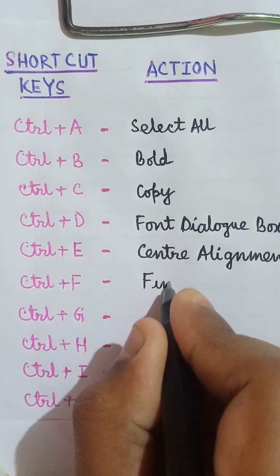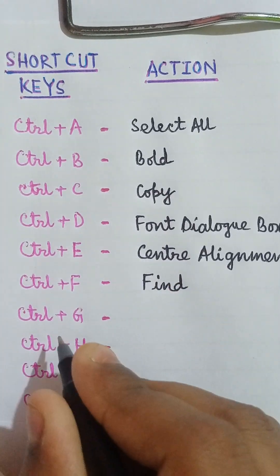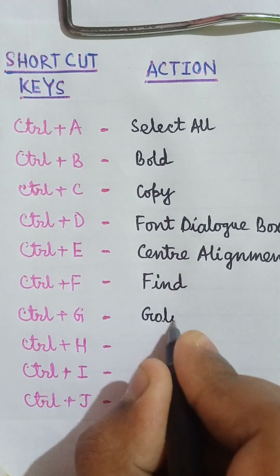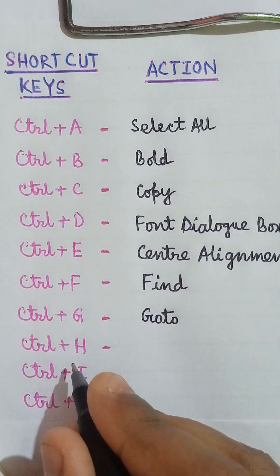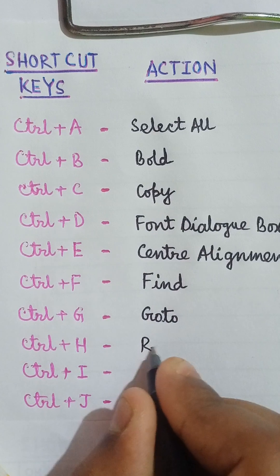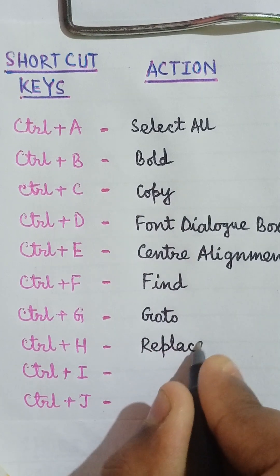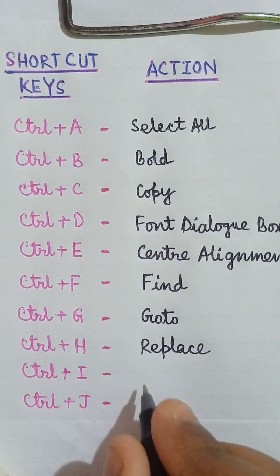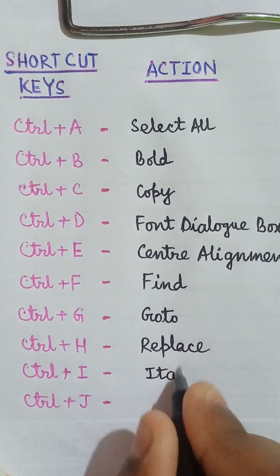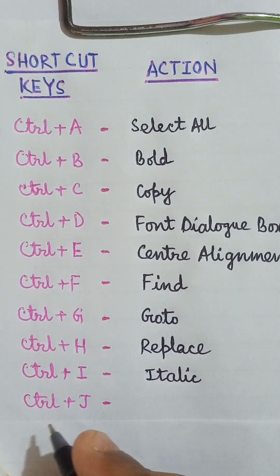Ctrl+G go to, Ctrl+H replace, Ctrl+I italic, Ctrl+J justified alignment.